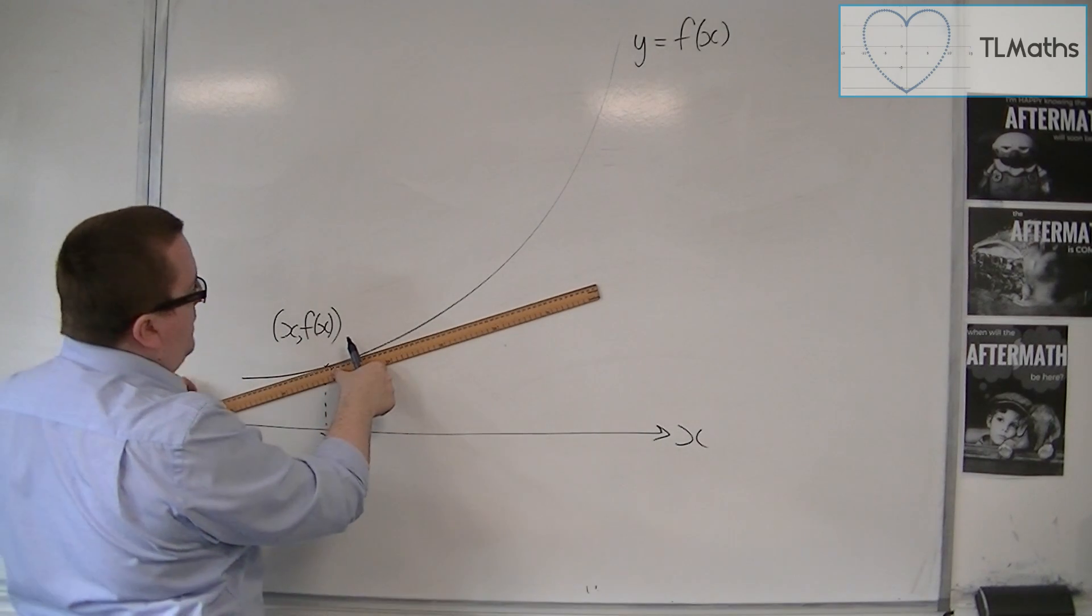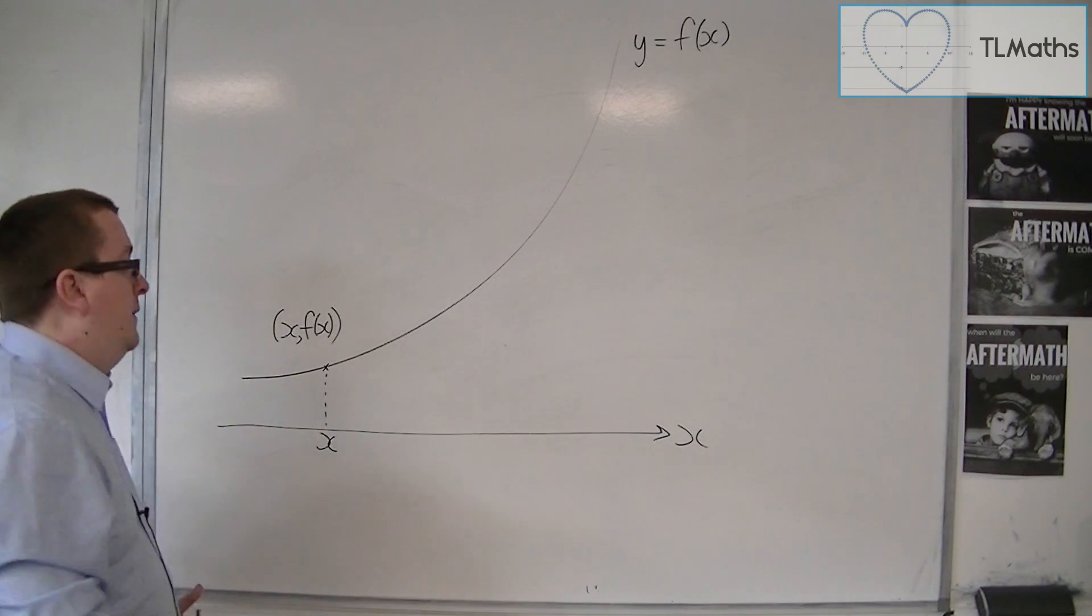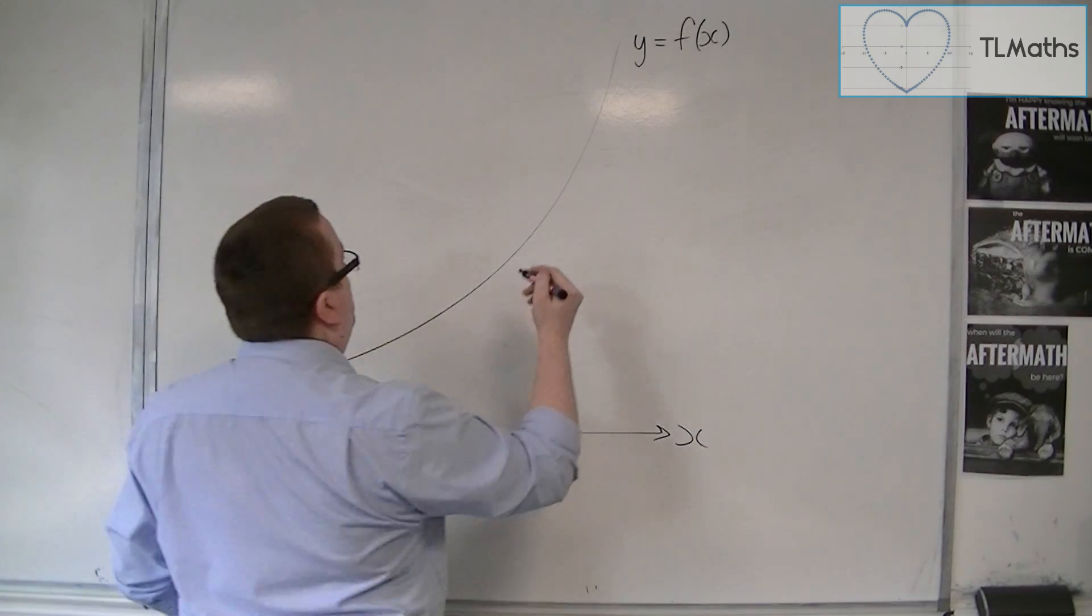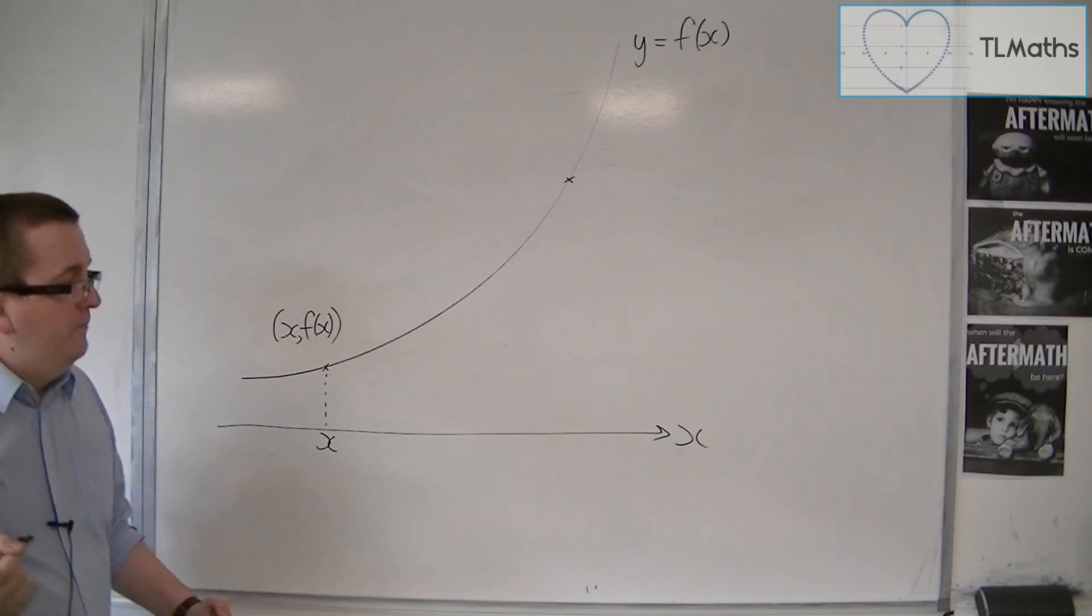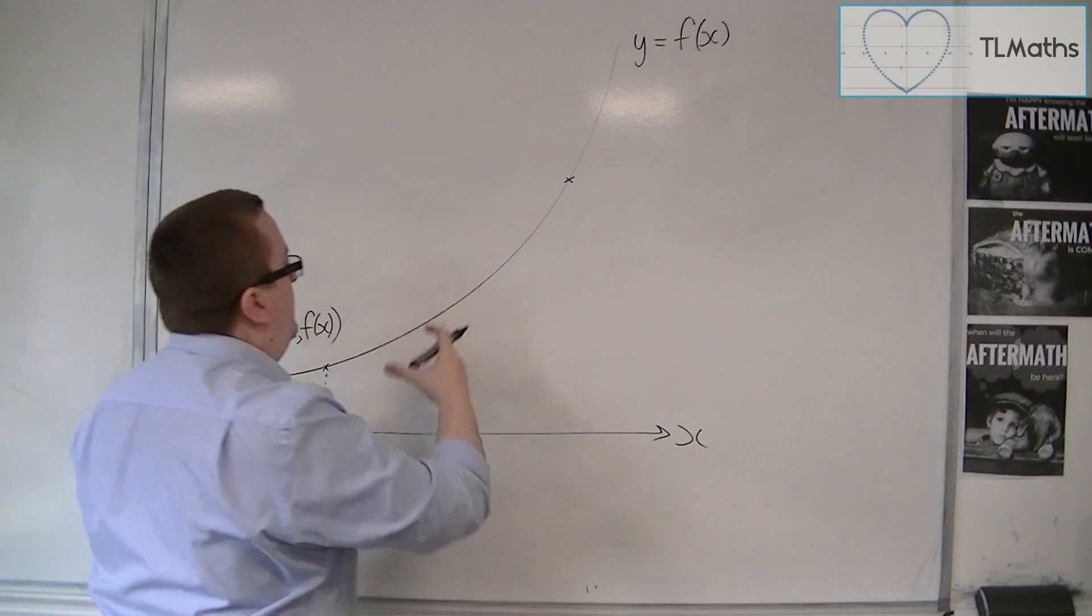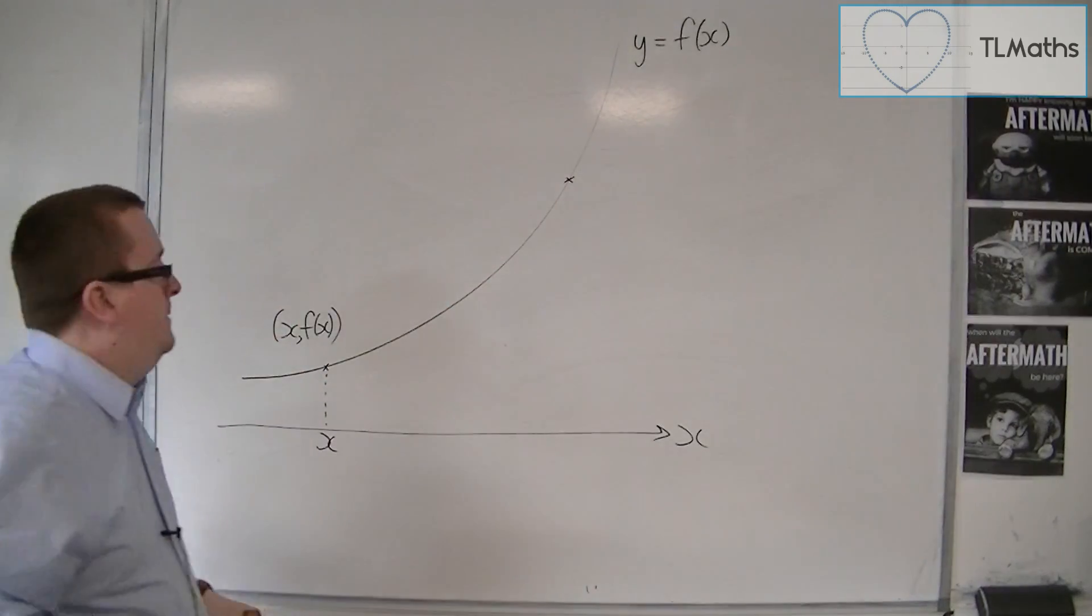So what I'm going to do is I'm going to look at a point that is reasonably close to it, that is also on the curve. So by reasonably close, I know that this doesn't seem like it's reasonably close, but let's say that I've zoomed in, and now these two points, although they looked quite close originally, are now kind of further apart.